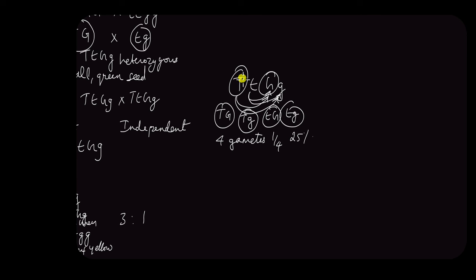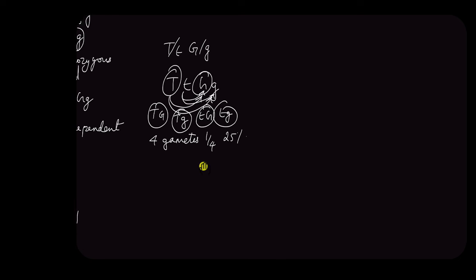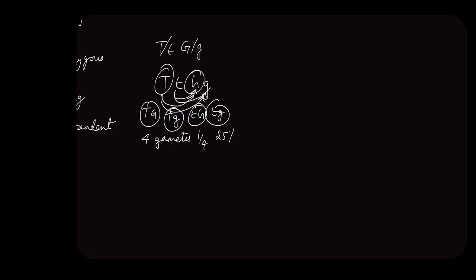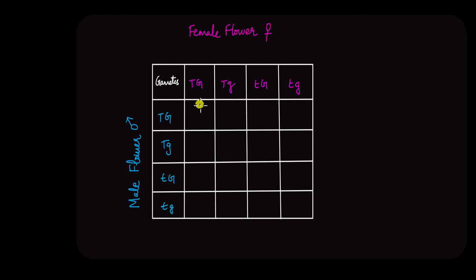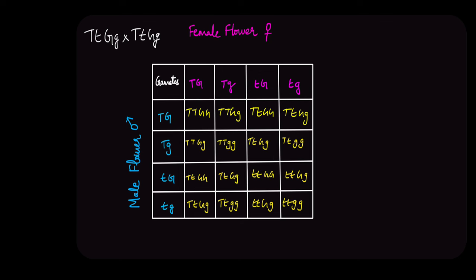That is possible only when the traits are inherited independently of one another. So based on this, the Punnett square revealed a completely new set of ratios. This is the Punnett square for a cross between these two genotypes, that is the heterozygous genotypes, capital T small t, capital G small g. This is a self cross, so both parents have the same genotype. Now if we were to fill this Punnett square, it would be like this.